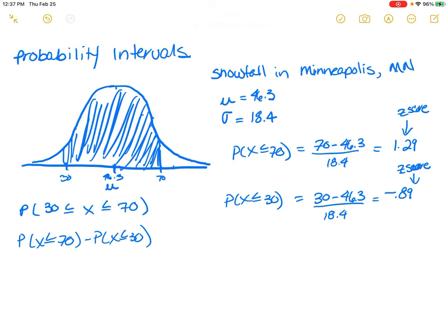You cannot take the difference between these two things to find the probability. You then have to look up the probability that Z is less than or equal to 1.29, which we're going to do with the table.